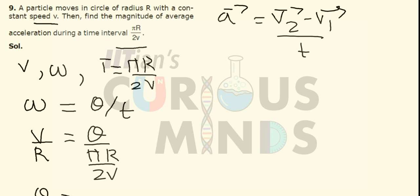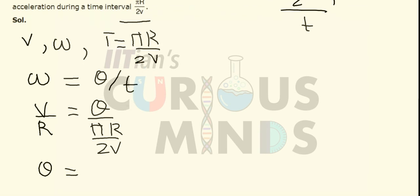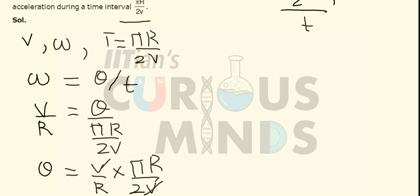Solving for theta: theta equals (v/r) multiplied by (πr/2v). The v's cancel and the r's cancel, giving theta equal to π/2.